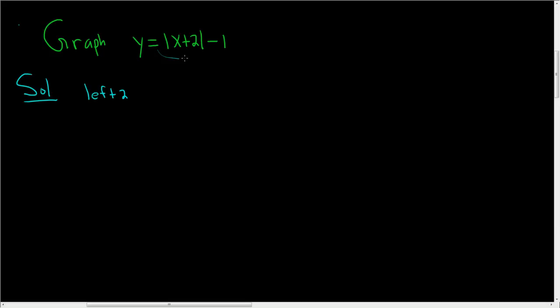And we're subtracting 1 from the entire absolute value, so we're going down 1. So what we're going to do is we're going to take our base function, which is the absolute value of x. It looks like this, looks like a v.